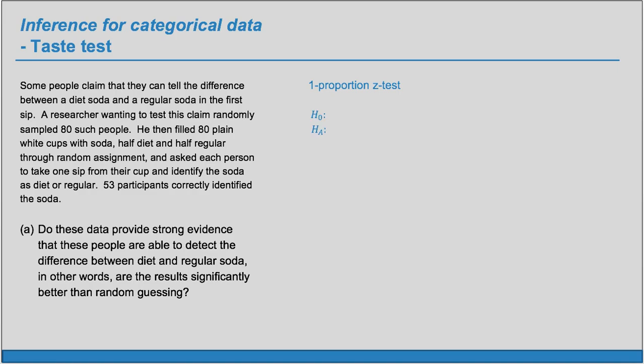And now we'll set up our hypotheses. The null claim always says nothing's going on. They're just guessing. So if they're just guessing, what proportion do we expect to get it right? 50%. So our null claim is going to be that P is 0.5, that they're just guessing. Our alternate claim is going to be they actually know which one it is. They're doing better than guessing that P really is greater than 0.5.